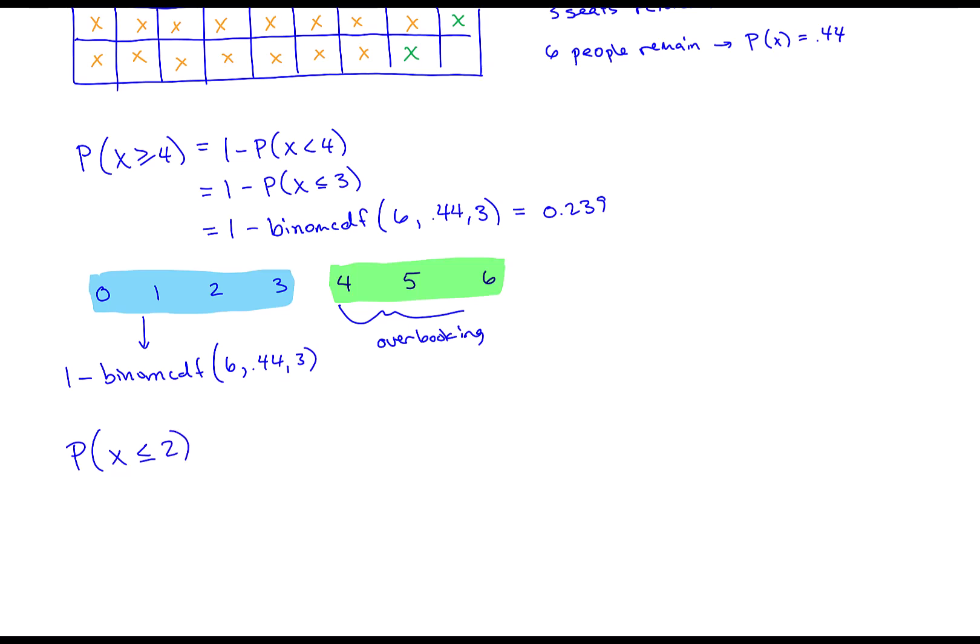So to answer this question, the probability of empty seats is going to be the probability that the number of people who show up is less than or equal to two. Because if it's zero, there still is all three empty seats. One, there's two empty seats. And if two people show up, there's one empty seat. Now, this is the definition of a CDF style probability, it's a left end. So we don't need to do any conversions - you really can just do binom CDF, exactly as written, 6, 0.44, and two as the last input.